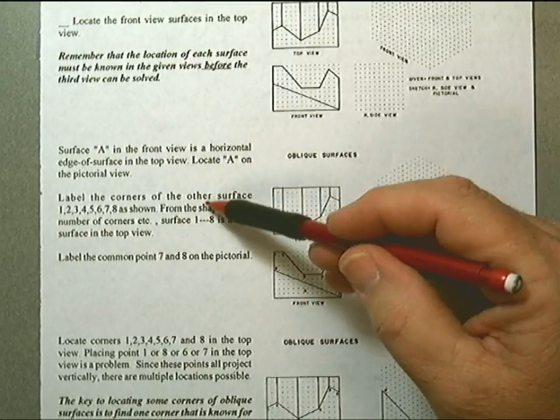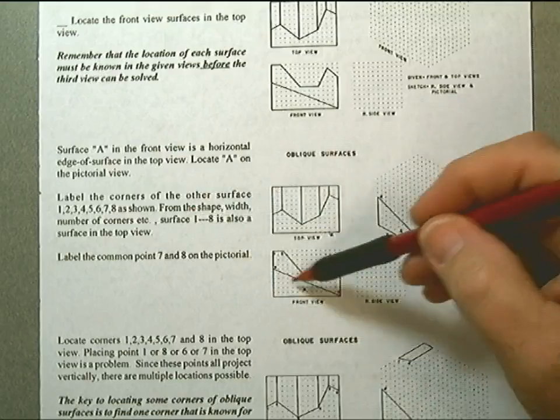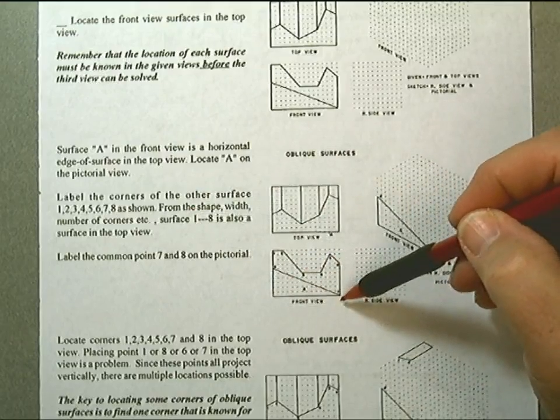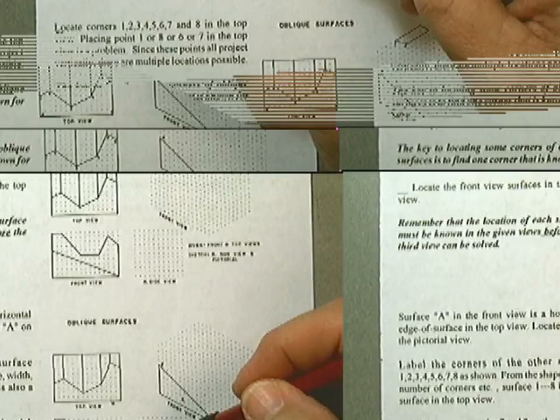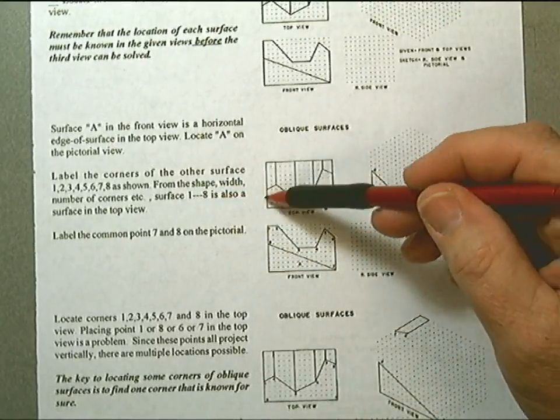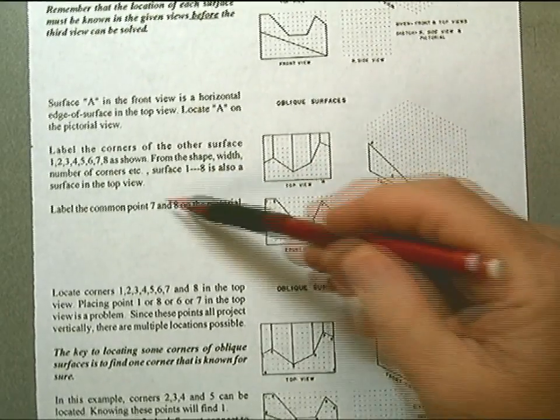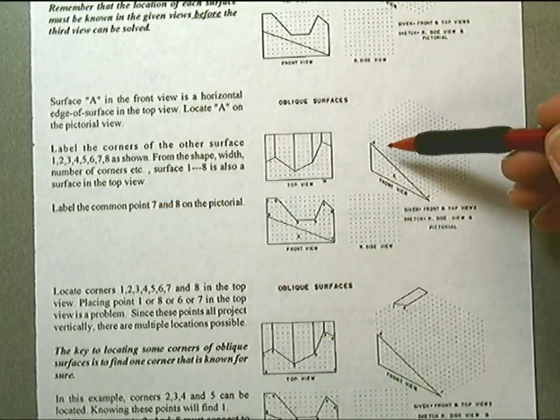We label the corners of the other surface 1 through 8 as shown. From the shape, width, number of corners, etc., surface 1 through 8 is also a surface in the top view. We label the common points 7 and 8 on the pictorial.